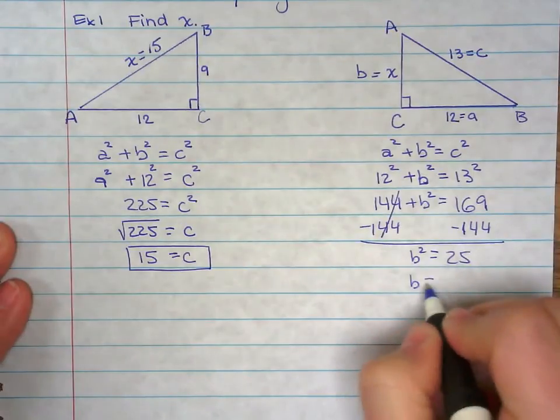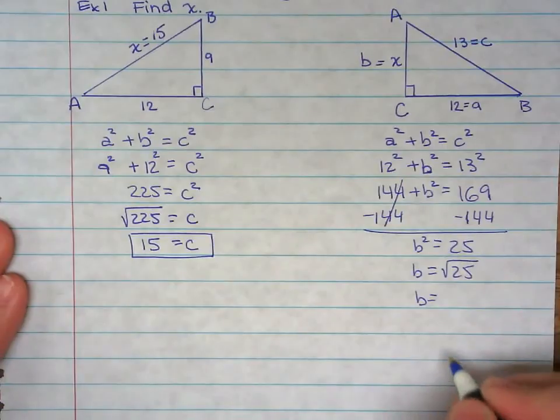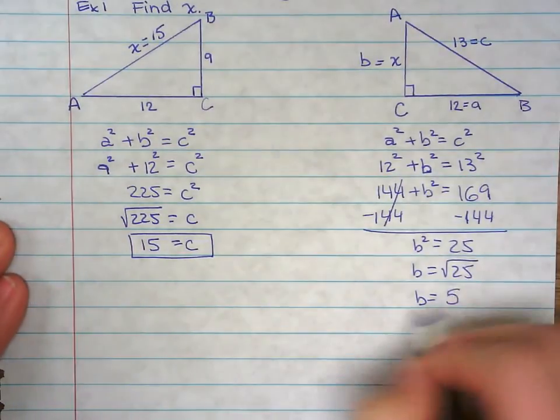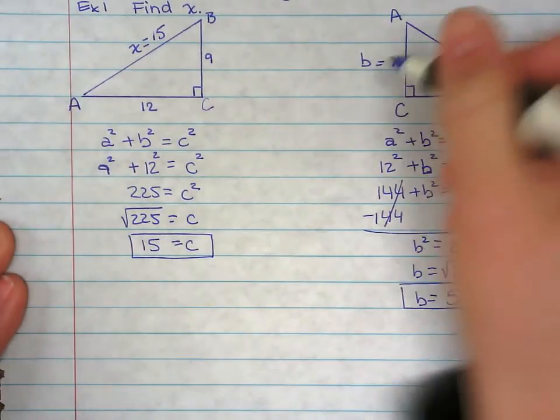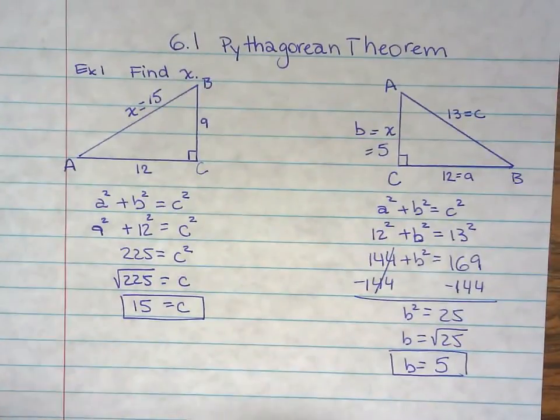Now you take the square root of 25 to get b. Square root of 25 is 5, and that is x equals 5.